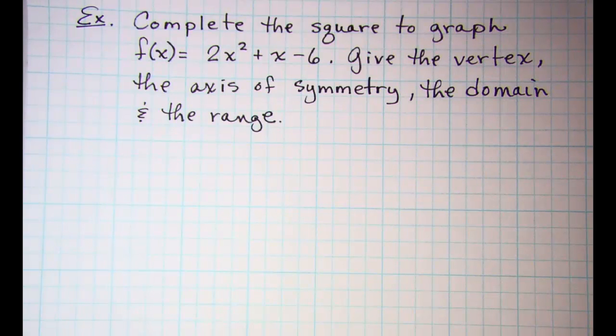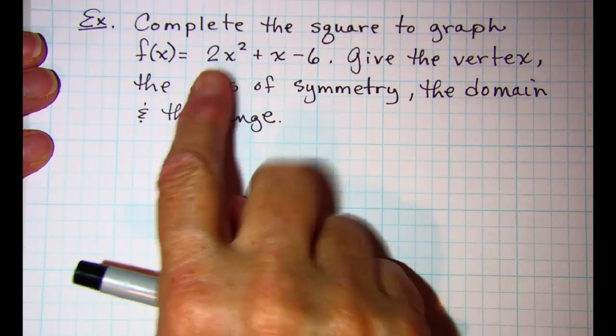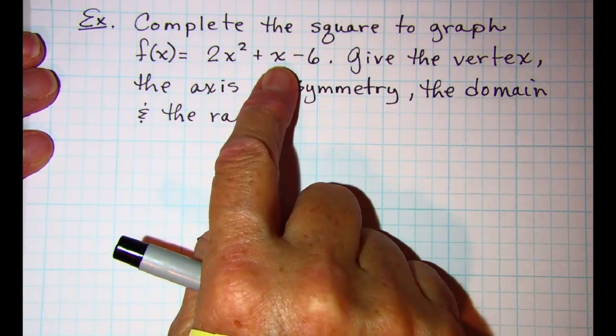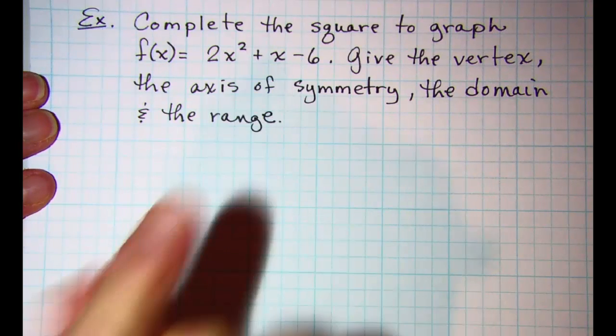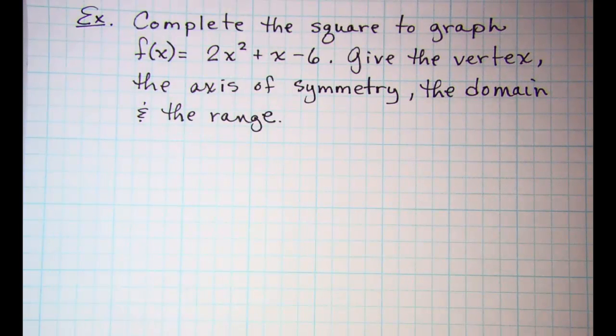In this video we will be looking at how to complete the square on a standard form of a quadratic equation to get the vertex form of the equation. Then we're going to graph the parabola, give the vertex, the axis of symmetry, the domain, and the range.